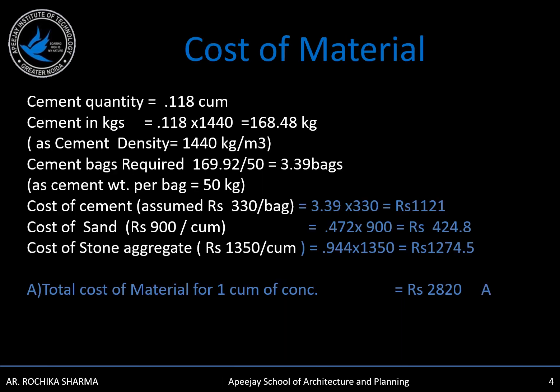Now that we have the quantities in cubic meters, cement bags are available in 50 kg bags. To convert, we multiply by 1440, which is the density of cement in kg per cubic meter. So we get 168.48 kg of cement. Dividing by 50, we get 3.39 bags of cement. 3.39 bags multiplied by the rate of cement, assuming Rs. 330 per bag, gives us the cost of cement, which is Rs. 1,121.